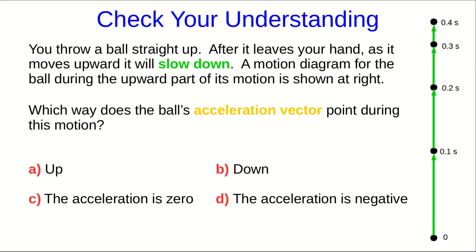Here is the question that I ended the last part of this lecture with, and all you needed to realize was that because the ball is slowing down, as we've seen, any time an object is moving in a straight line and slowing down, its acceleration points in the opposite direction to the motion, and so the acceleration vector points down.